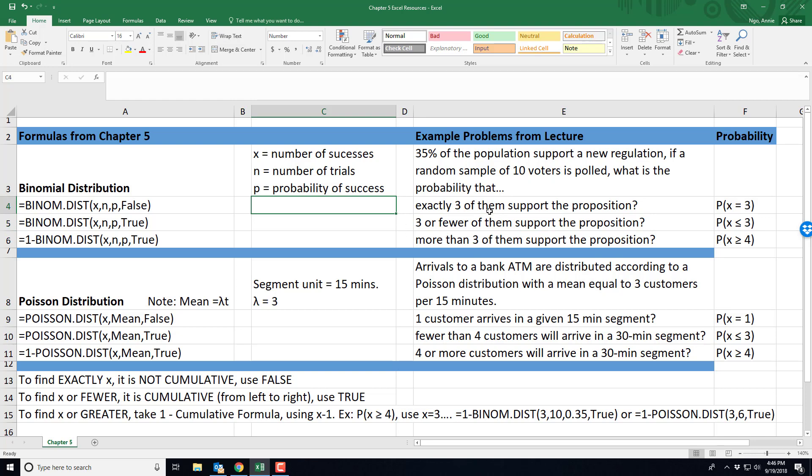So in this first scenario where it says exactly three of our voters support the proposition, you want to note that the probability is stated as x equals 3. That's our event of interest.